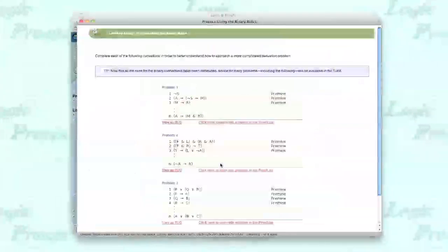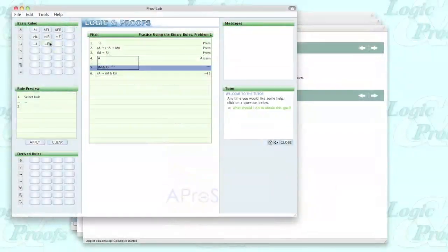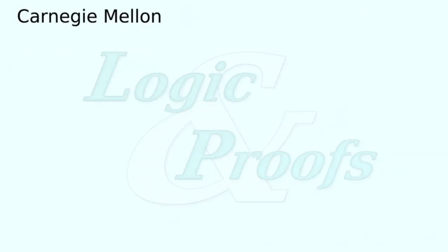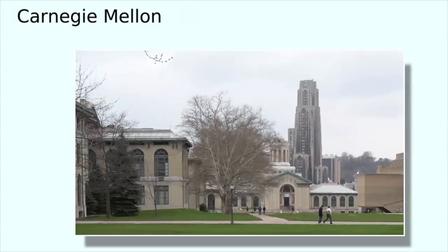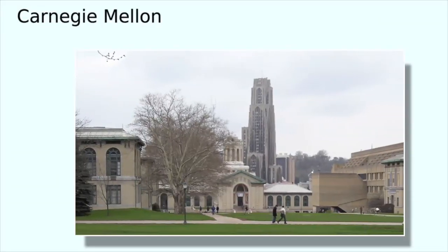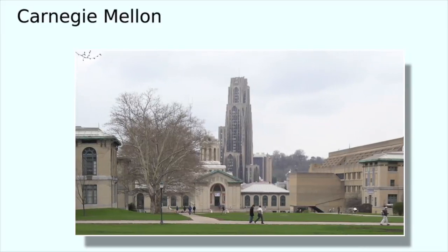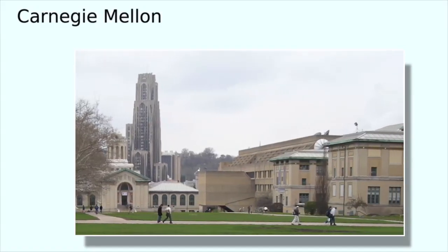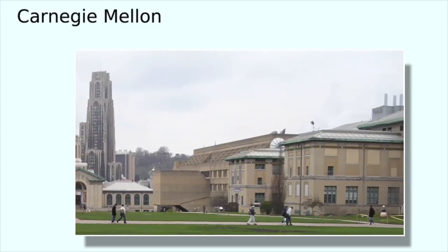Due to the dynamic interaction between students and program made possible through the ILEs, Logic and Proofs is much more than an online textbook. The effects have been dramatic. At Carnegie Mellon, students from across the university take the course — from drama, history, and creative writing, as well as from philosophy, mathematics, engineering, and computer science.